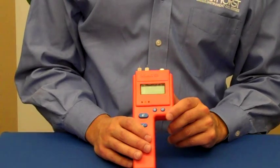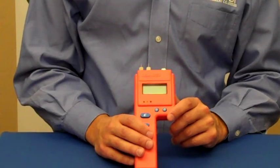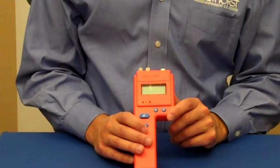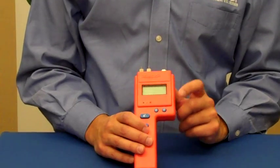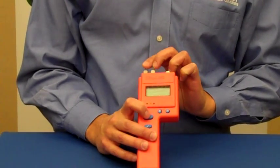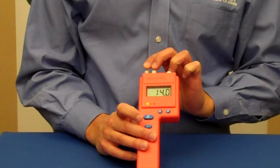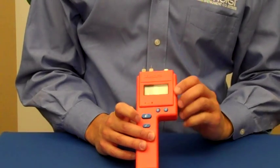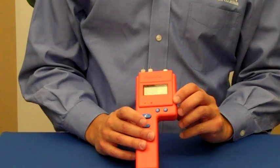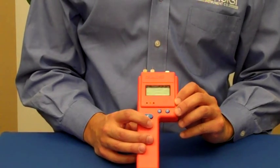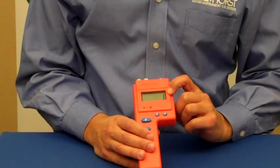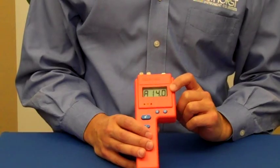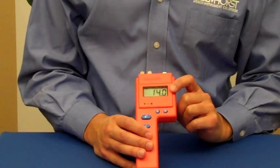The last feature that the BD2100 offers is limited storage capability. Every time you take a reading by pressing the read button and releasing it, it stores that reading into memory. And then you can press the check button to see how many readings have been stored, the average of those stored readings, and the highest reading.